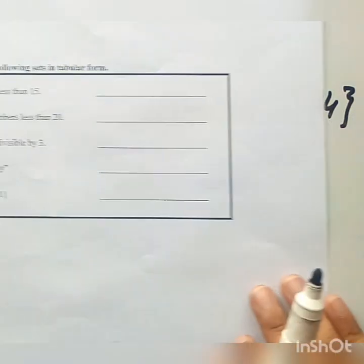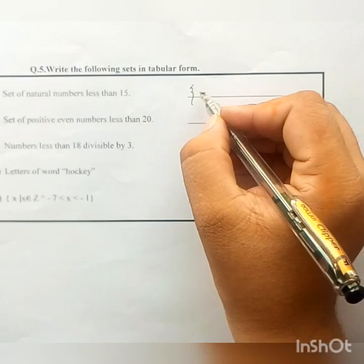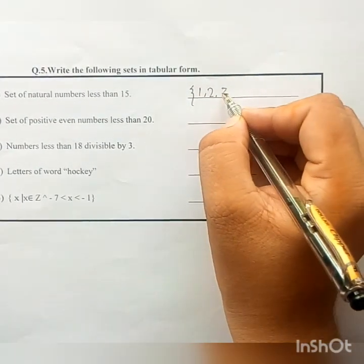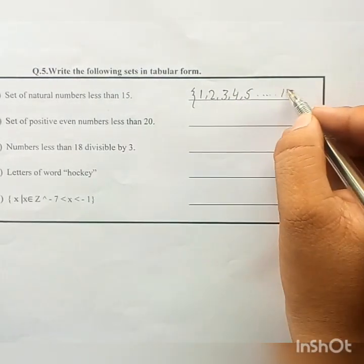The set of natural number less than 15 in tabular form can be written as {1, 2, 3, 4, 5...14}. This is called the tabular form.